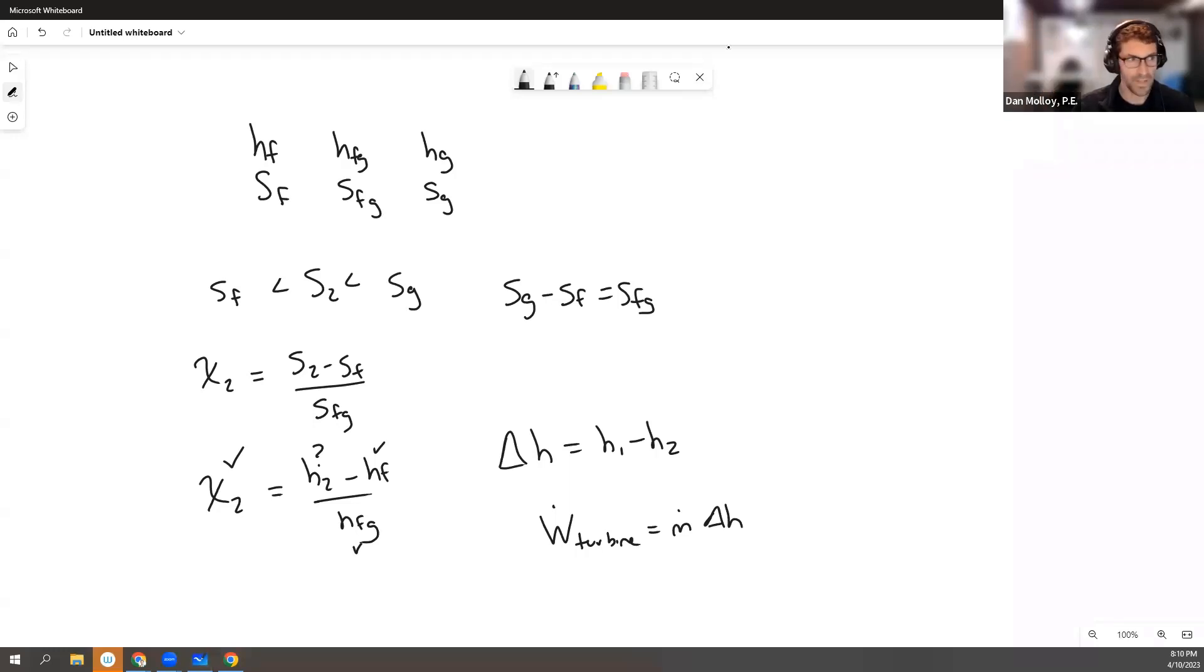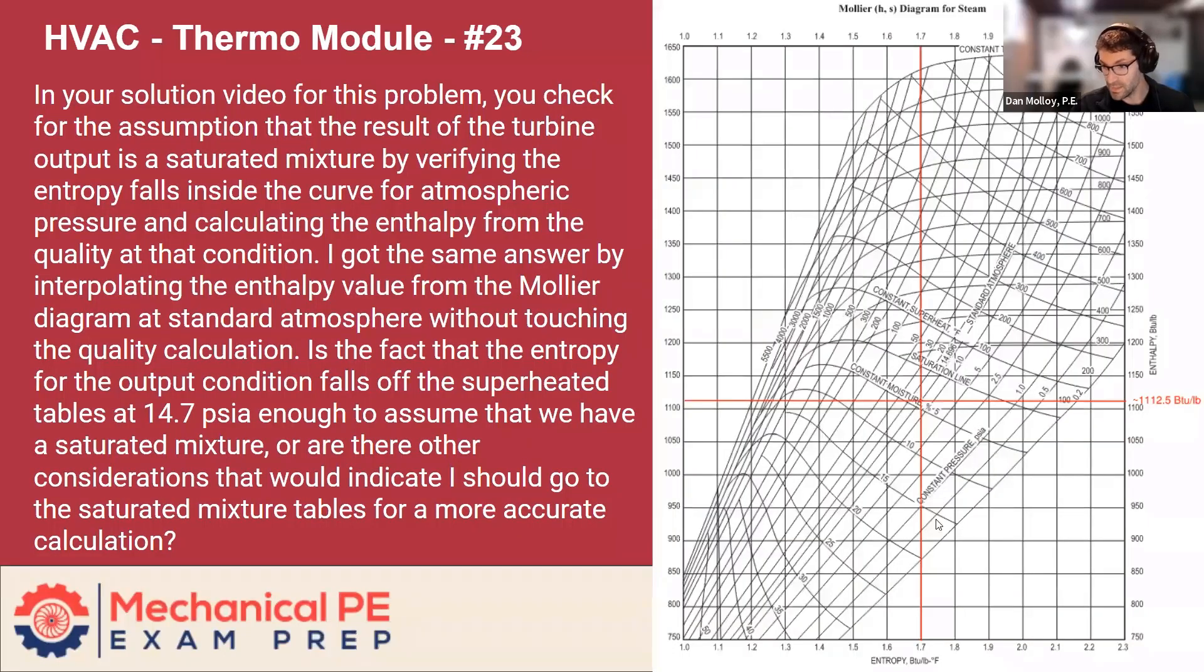And then the alternate method that you proposed, which I quite like, since it's atmospheric pressure, you use the Mollier diagram, and you find the standard atmosphere line, this diagonal coming down, and you find that point, and you knew the entropy at state two was 1.7. So then you took the horizontal here and read off the enthalpy from the vertical axis. And you got 11, 12 and a half, which was very close to, I forget what it was.